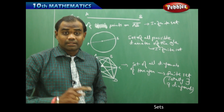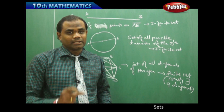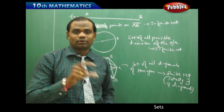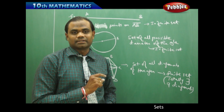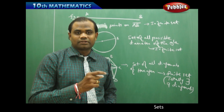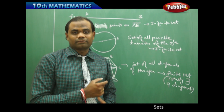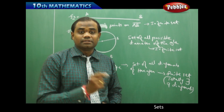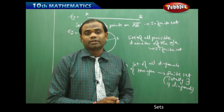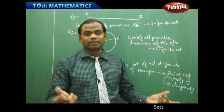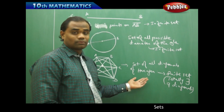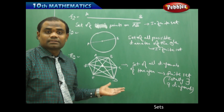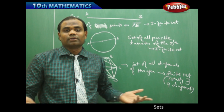The set of all diagonals of a polygon is a finite set, not an infinite set. To identify whether sets are finite or infinite, sometimes we need more advanced mathematical knowledge — for example, knowing the number of diagonals of a polygon, which turns out to be a finite set.